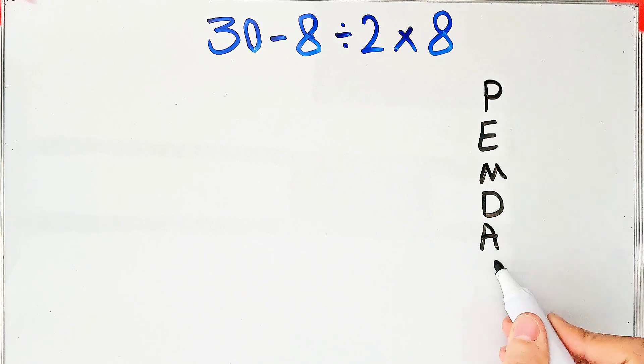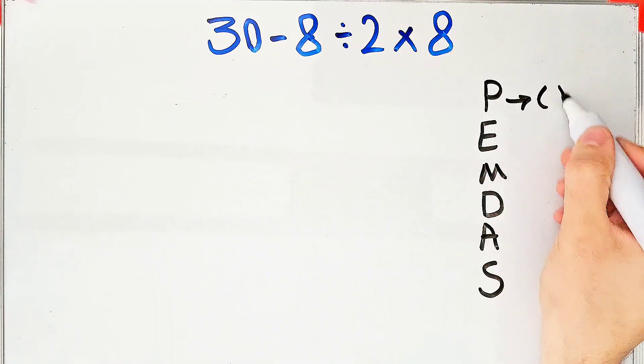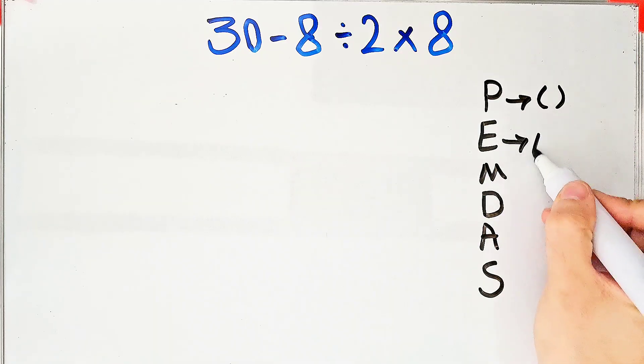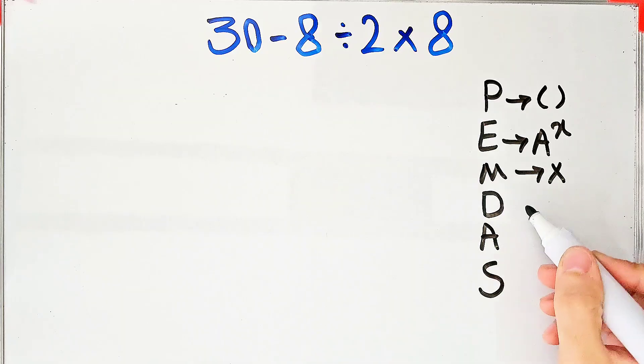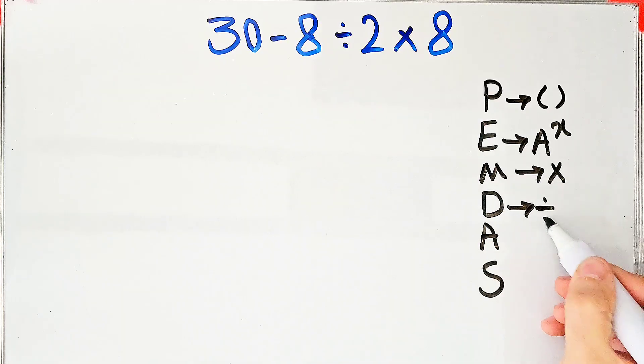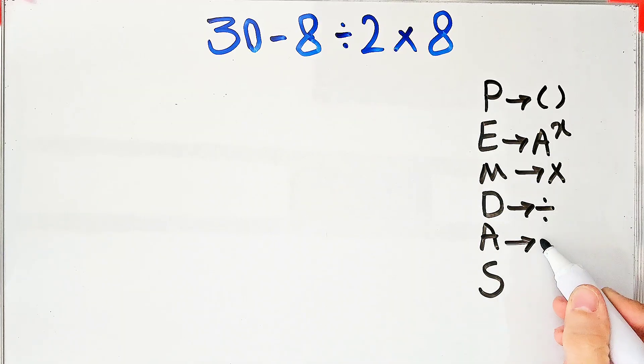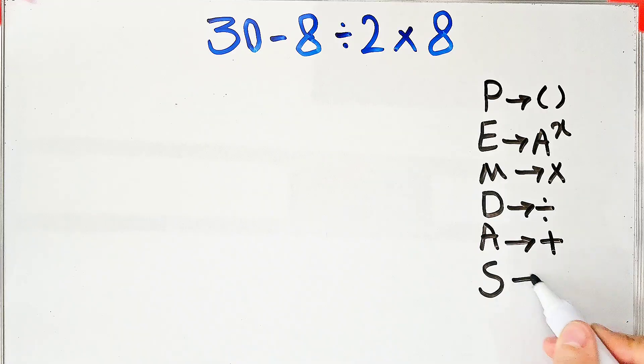In this rule, P stands for parentheses, E stands for exponent, M stands for multiplication, D stands for division, A stands for addition, and S stands for subtraction.